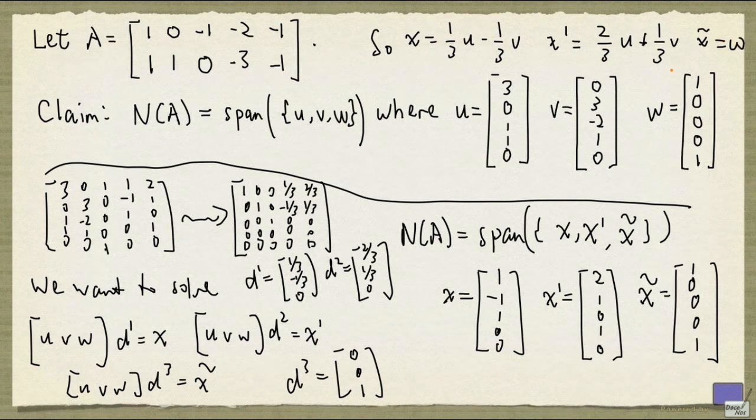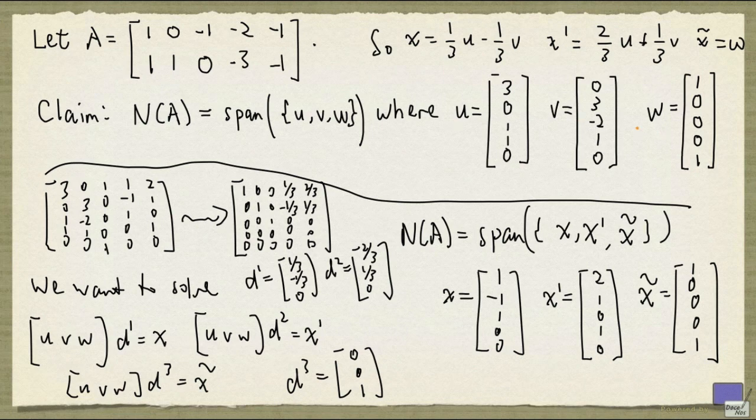So x, x prime, and x tilde can indeed be written as linear combinations of u, v, and w. And so this claim is true.